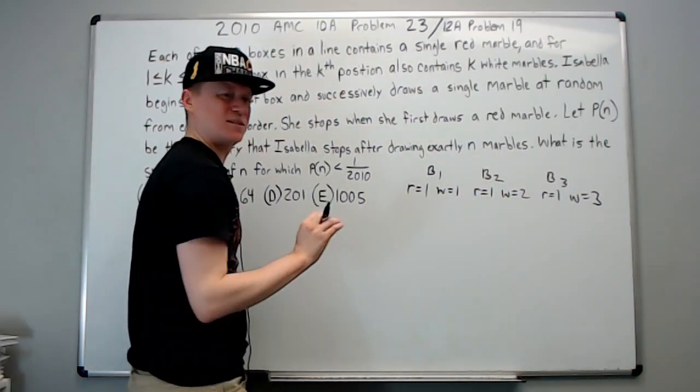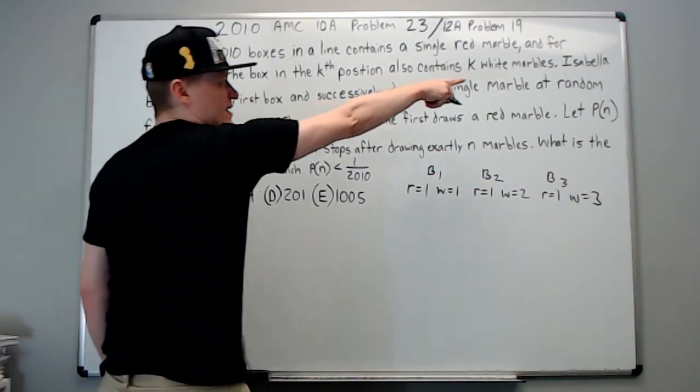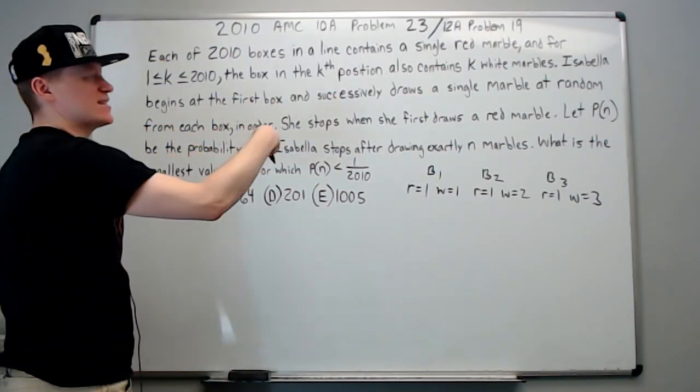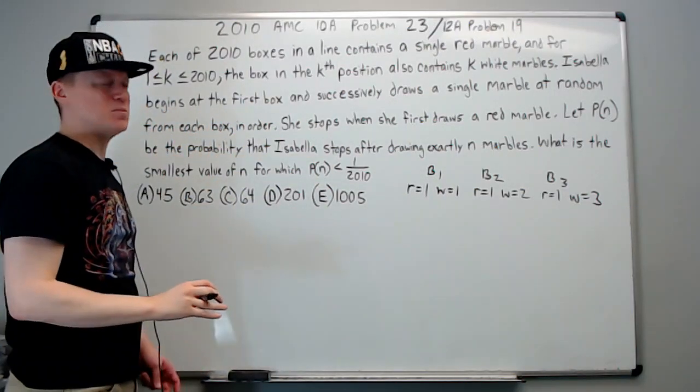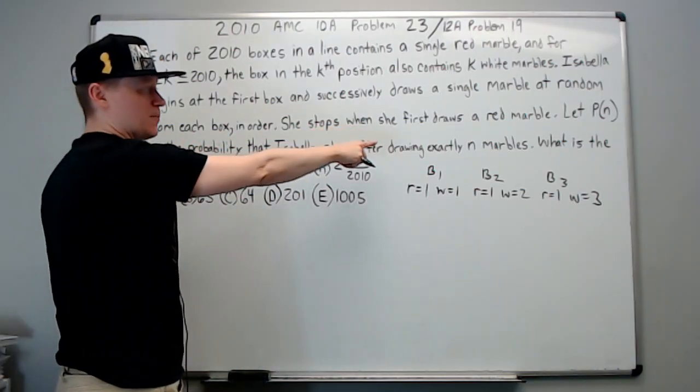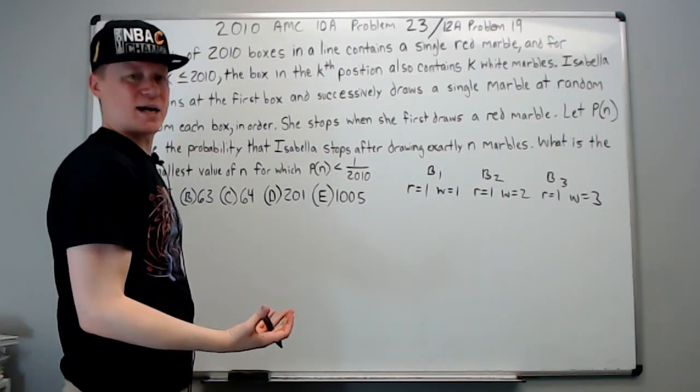Isabella begins at the first box and successively draws a single marble at random from each box in order. She stops when she first draws a red marble.